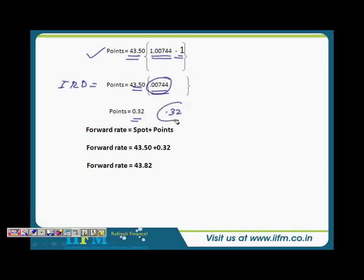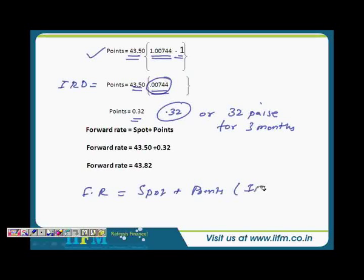0.32 or 32 paise. This is your interest rate differential for a period of 3 months. Now you add this as per our theoretical formula. Forward rate was spot plus points or interest rate differentials. This becomes 43.50, the spot rate, plus 0.32, which equals 43.82.